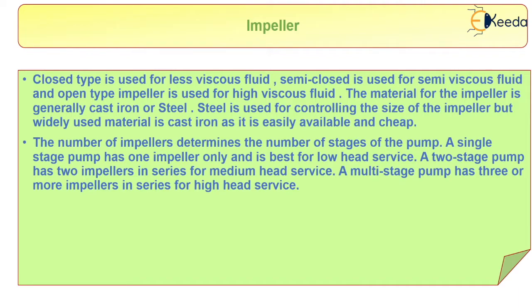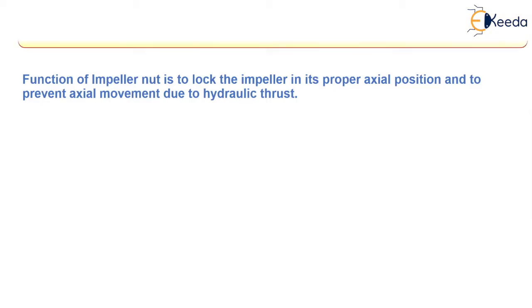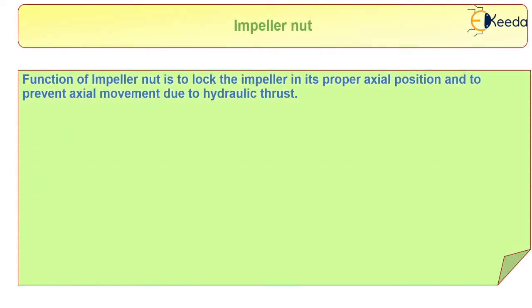The number of impellers determines the number of stages of the pump. A single stage pump has one impeller only and is best for low head service. A two-stage pump has two impellers in series for medium head service. A multi-stage pump has three or more impellers in series for high head service. The function of the impeller nut is to lock the impeller in its proper axial position and to prevent axial movement due to hydraulic thrust.